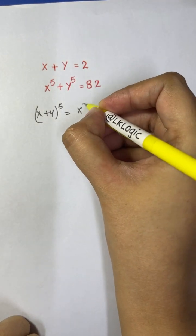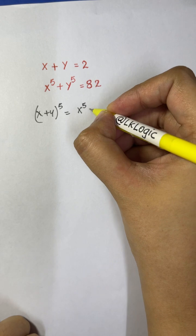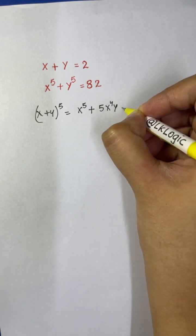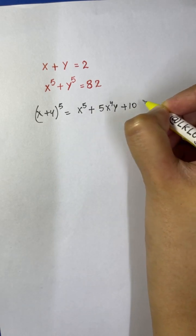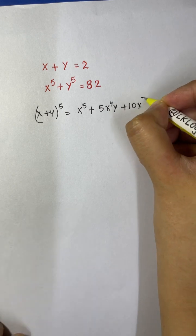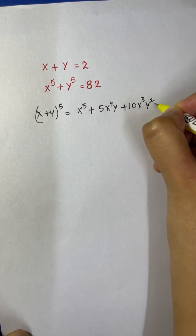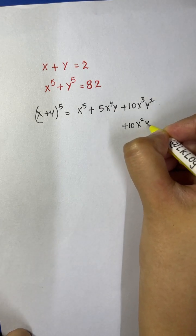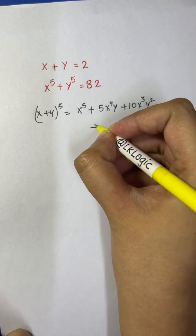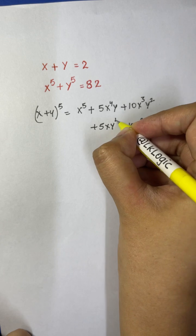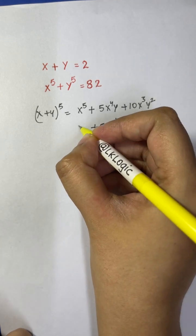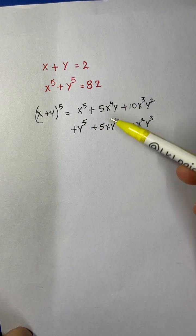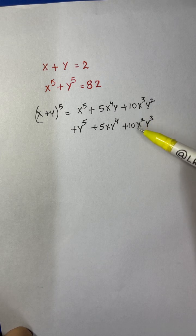Using the binomial theorem, we get: x to the 5 plus 5x to the 4 times y plus 10x cubed y squared plus 10x squared y cubed plus 5xy to the 4 plus y to the 5. We have rearranged it in this order so that we can factorize it easily.